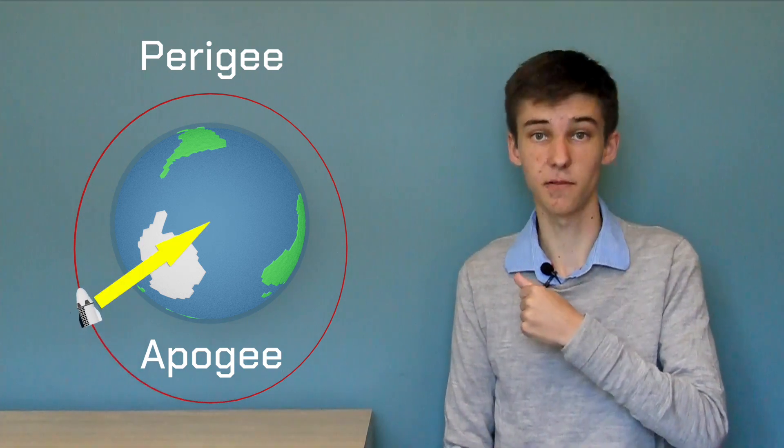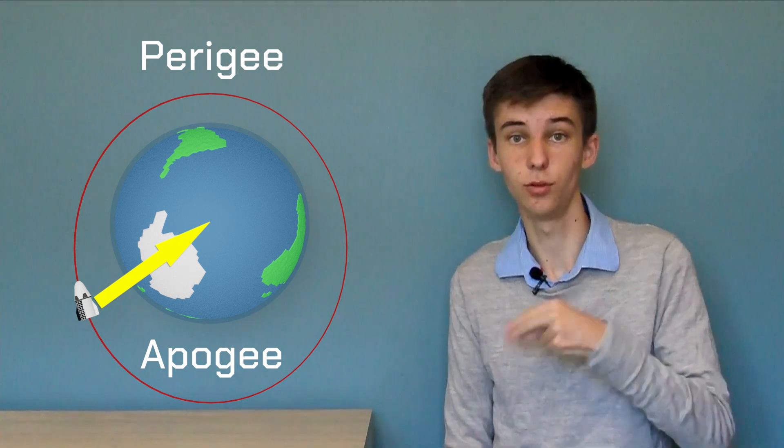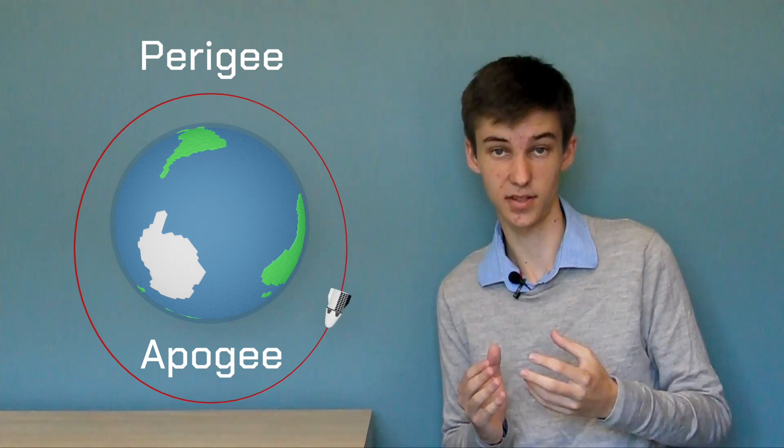And as we're coming back down from apogee now, we're getting pulled towards the centre of the Earth, which is speeding us up. So by the time we get down to perigee, we are going at our fastest speed.